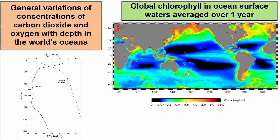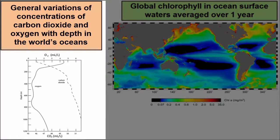Read the title and caption of the visualization. What do they claim we are seeing? For example, this graph is showing general variations of the concentrations of carbon dioxide and oxygen gas with depth in the world's oceans.